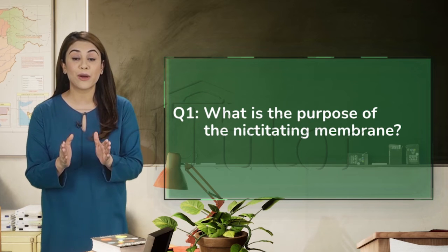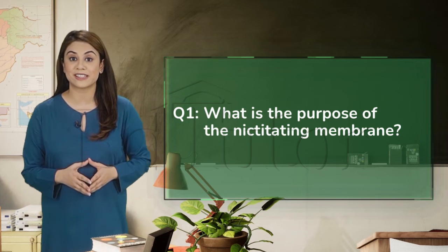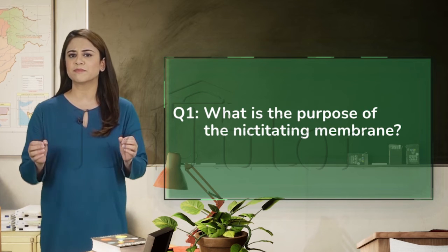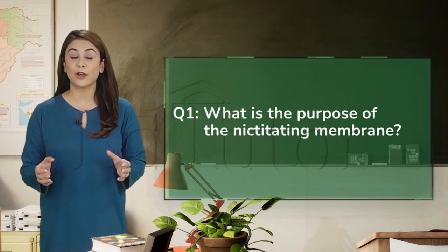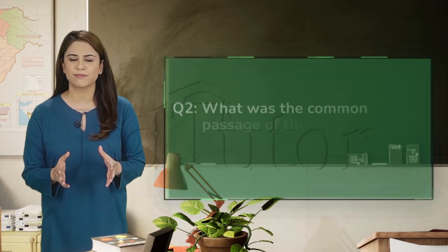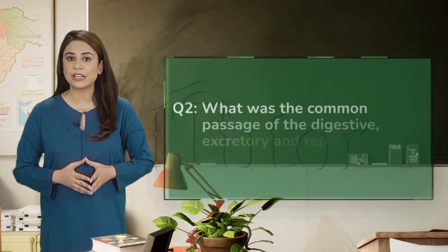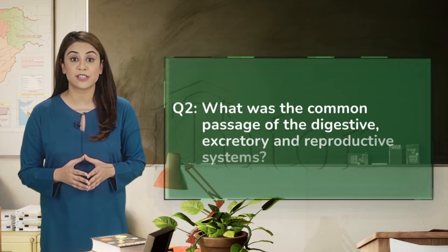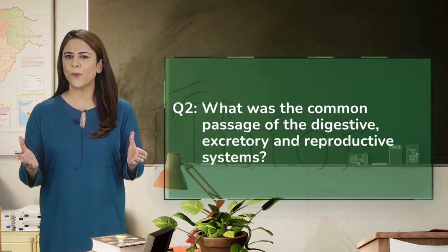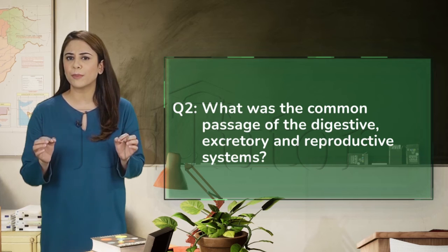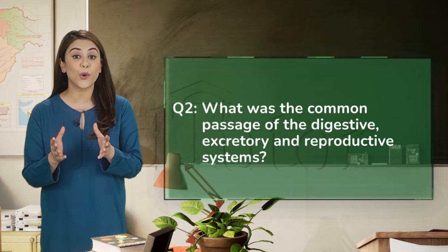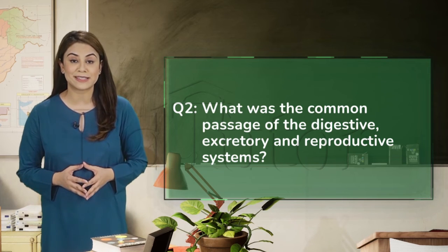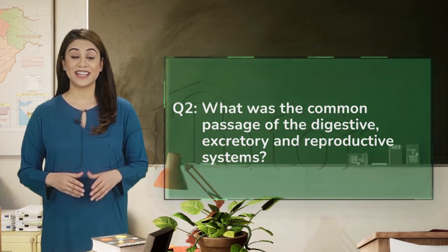And if you have found the answer, wise guy, tell me — where did the digestive, excretory, and reproductive systems end? What was the common opening to all three of these? I hope this keeps you guessing for a while.